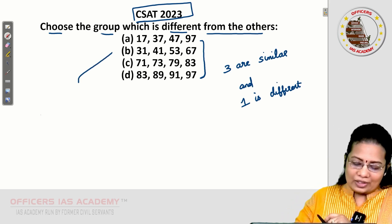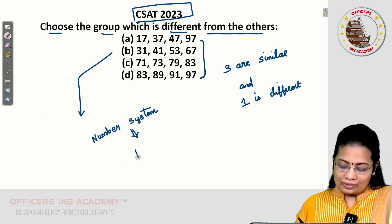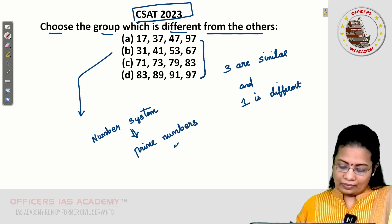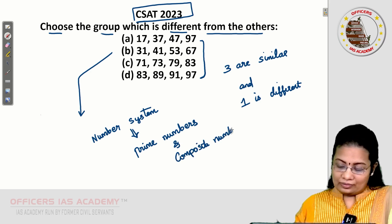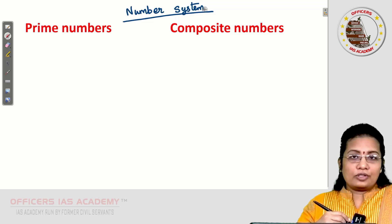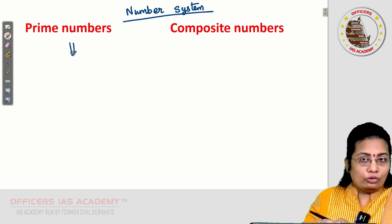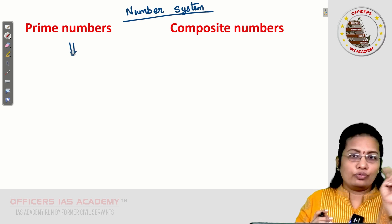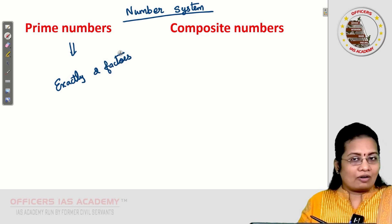The concept here is asked from under the number system. The subtopic is prime numbers and composite numbers. Let's see the prime numbers concept first. Numbers which have exactly two factors are called prime numbers.